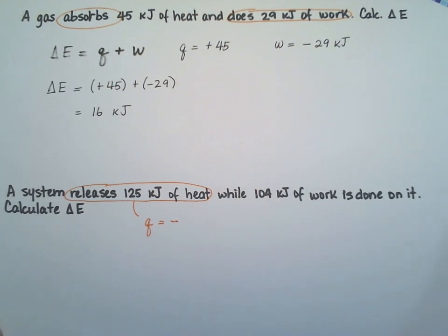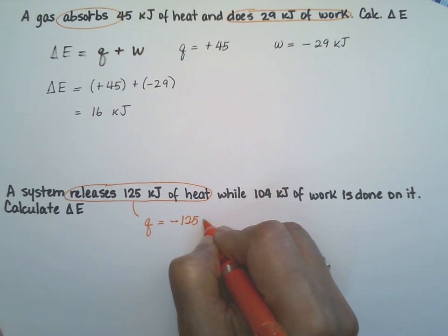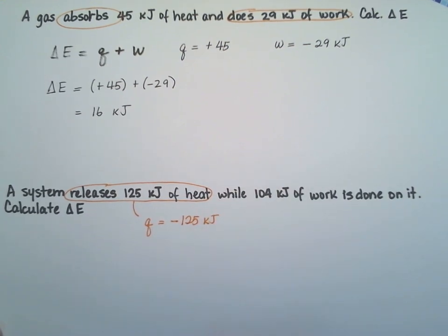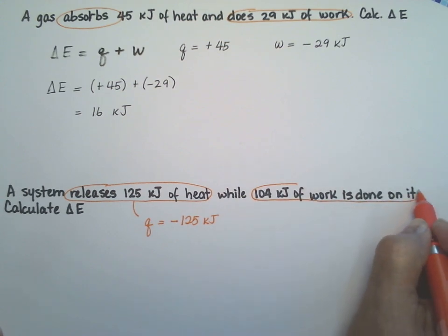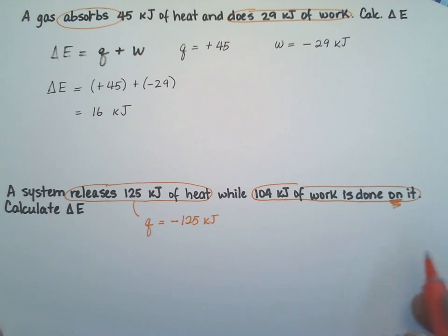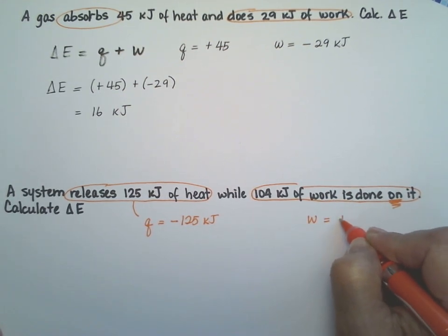The system is flowing from the heat to the surroundings. So that's minus 125 kilojoules, and 104 kilojoules of work is done on the gas. So that one is a positive number. So the work is going to be positive.